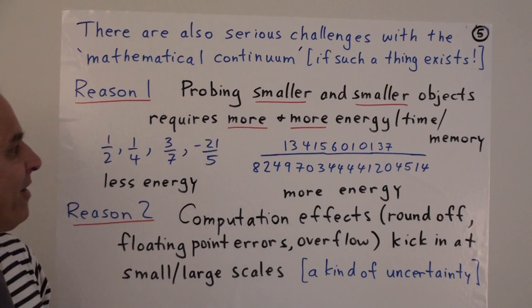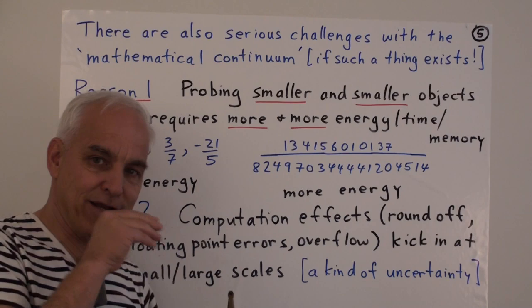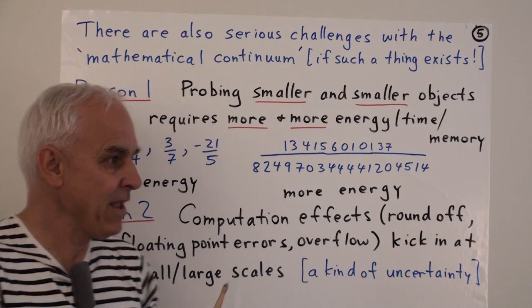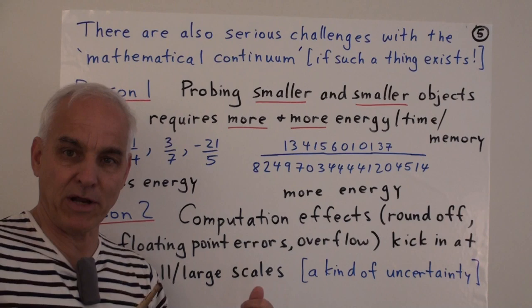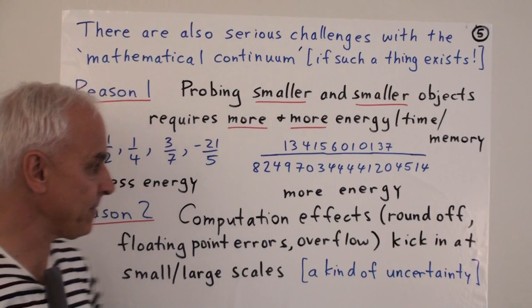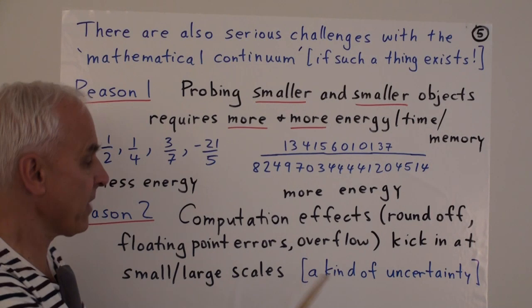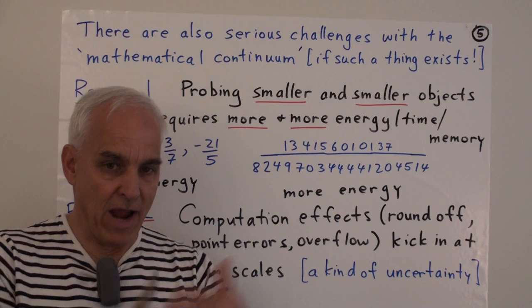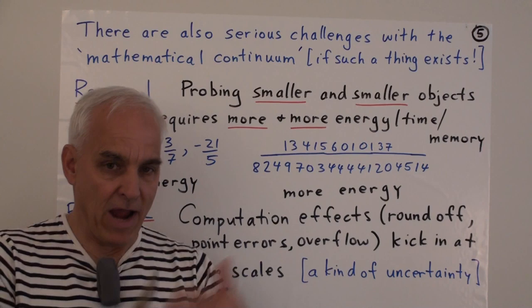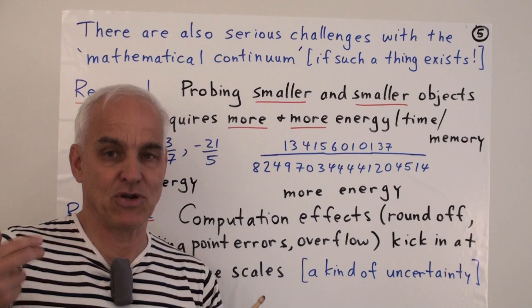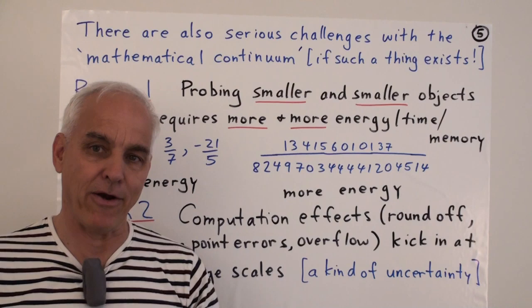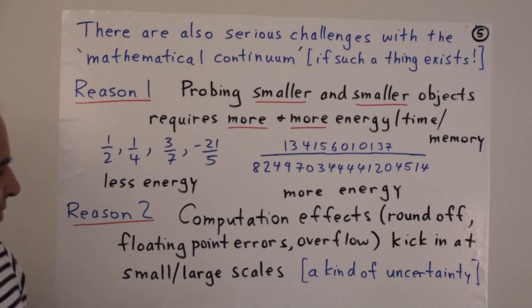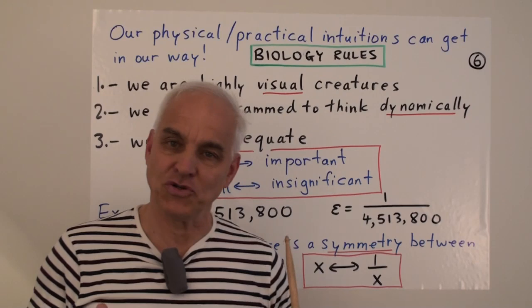The numerators and the denominators are getting bigger. Even if the fractions themselves are getting a lot smaller. So it is interesting that there is a parallel between the physical story of trying to use photons of increasingly high frequency to pick up the resolution of things, and having to work with fractions of increasingly big denominators and numerators to mathematically access smaller and smaller intervals or objects. There is a second reason as well that computational effects having to do with round off or floating point errors or overflow kick in at small or very large scales. So it is a kind of mathematical uncertainty. In practice, when we are measuring things, we usually use floating point. So there is a certain amount of imprecision.